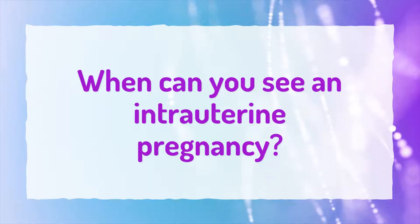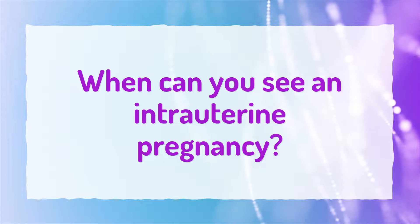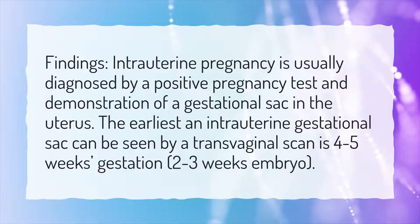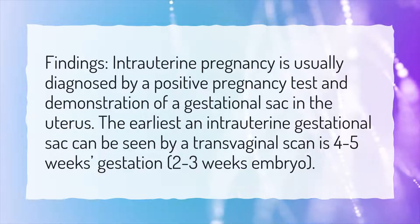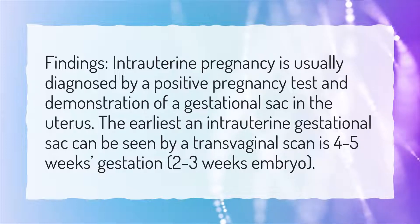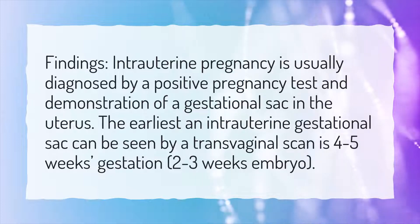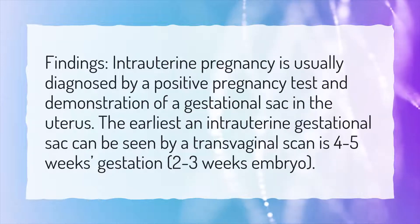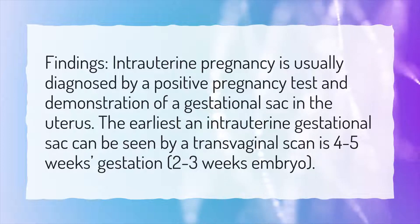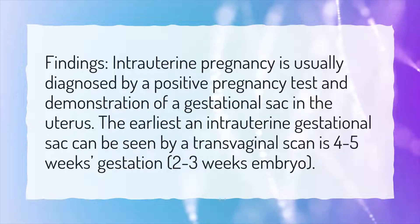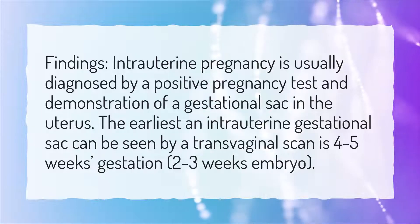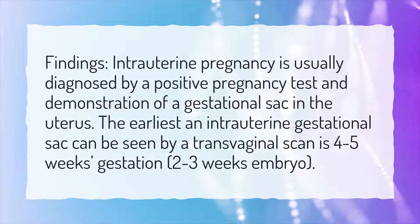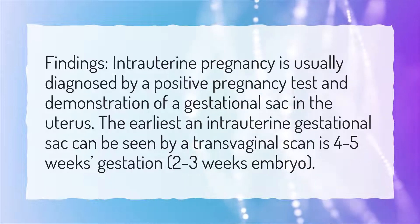When can you see an intrauterine pregnancy? Intrauterine pregnancy is usually diagnosed by a positive pregnancy test and demonstration of a gestational sac in the uterus. The earliest an intrauterine gestational sac can be seen by a transvaginal scan is 4–5 weeks gestation, which is 2–3 weeks embryo age.